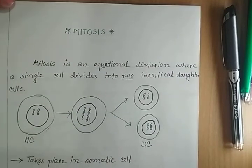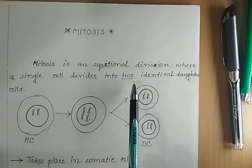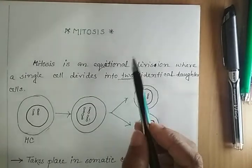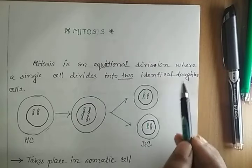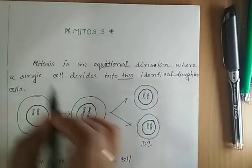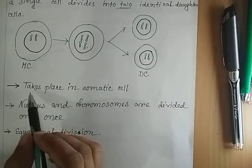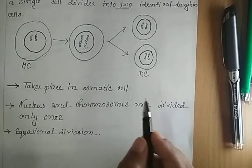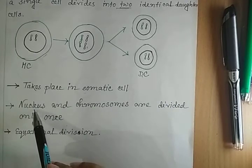The second type of cell division is mitosis. Mitosis is an equational division in which a single cell divides into two identical daughter cells. Amitosis also gives two daughter cells, but during mitosis the daughter cells are identical to the mother cell. This type of cell division takes place in somatic cells of eukaryotic organisms, that means higher organisms.